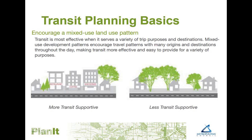Transit works best when it serves a mix of uses. Our more productive routes have a high amount of churn — that is, riders getting on and off through the entire length of the corridor — because these routes serve a multitude of destinations that are active throughout the day. Routes that serve primarily residential neighborhoods tend to fill up until they reach their final destination, such as a transitway station or major employment center. These largely job-oriented feeder routes provide an important link in the transit network, but are less likely to warrant high levels of off-peak or weekend service.